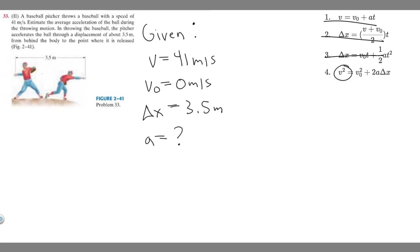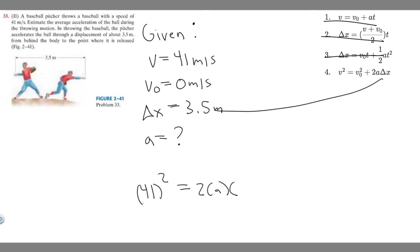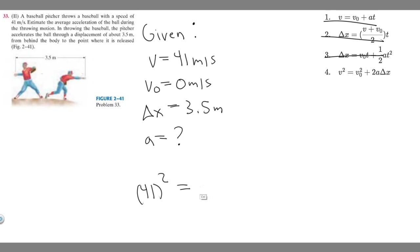So using the fourth kinematic equation: v squared equals v sub zero squared plus 2a times delta x. We know v is 41, so it's 41 squared. V sub zero is zero, so that term drops out. Then it's 2 times acceleration times delta x, which is 3.5 meters. Multiplying 2 by 3.5 gives 7, so we have 41 squared equals 7a. Dividing both sides by 7, a equals 41 squared over 7.